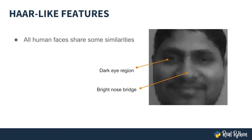All human faces share some common similarities. If you look at a photograph showing a person's face, you'll see that the eye region is darker than the bridge of the nose. The cheeks are also brighter than the eye region.